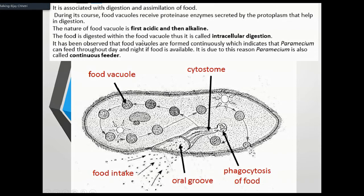When the food vacuole first forms, it is acidic. Then it becomes alkaline, and digestive enzymes act upon the food. Paramecium is also called a continuous feeder because food vacuoles are continuously forming in its body.